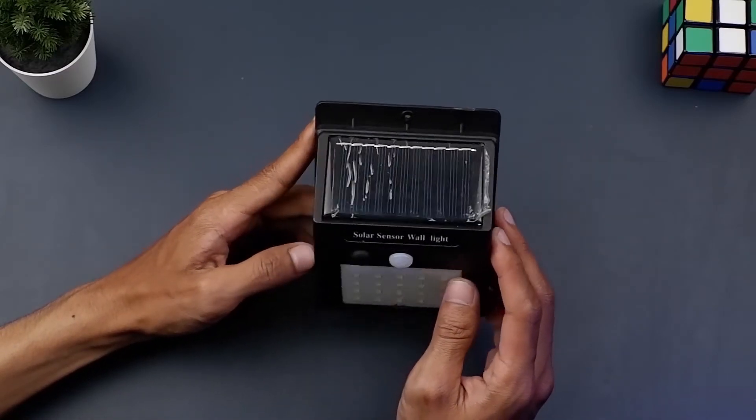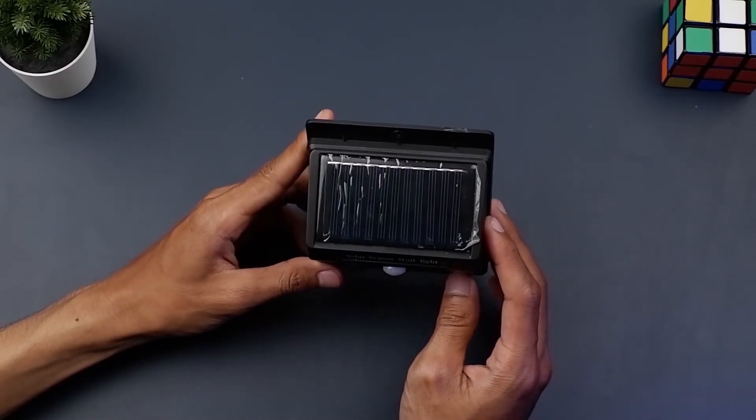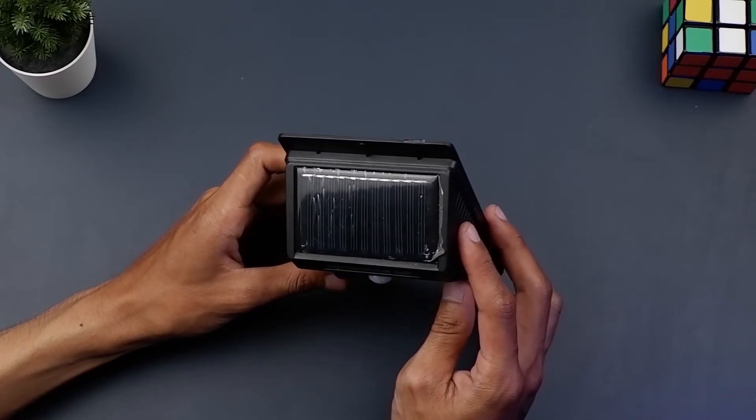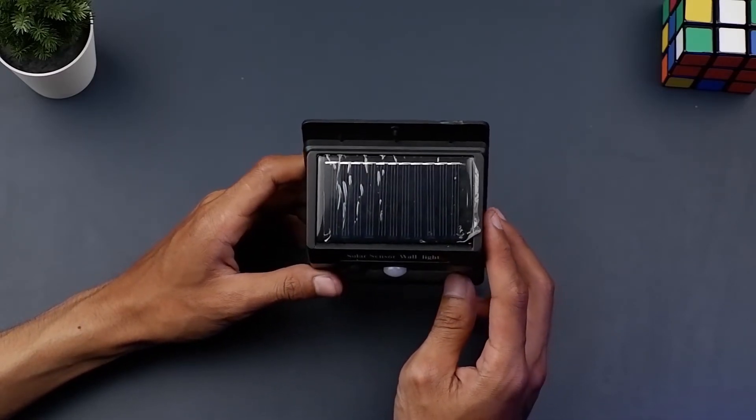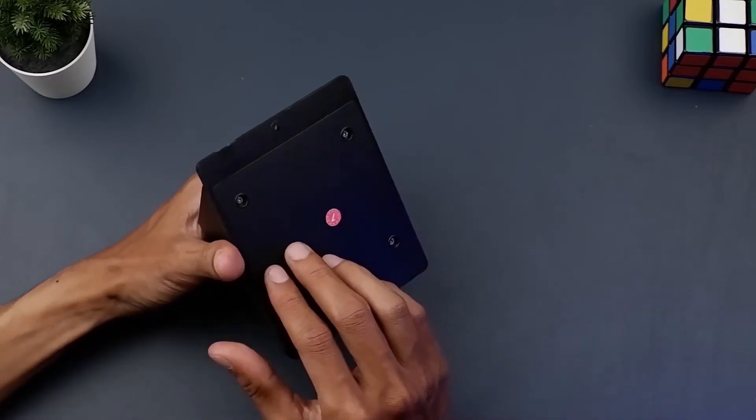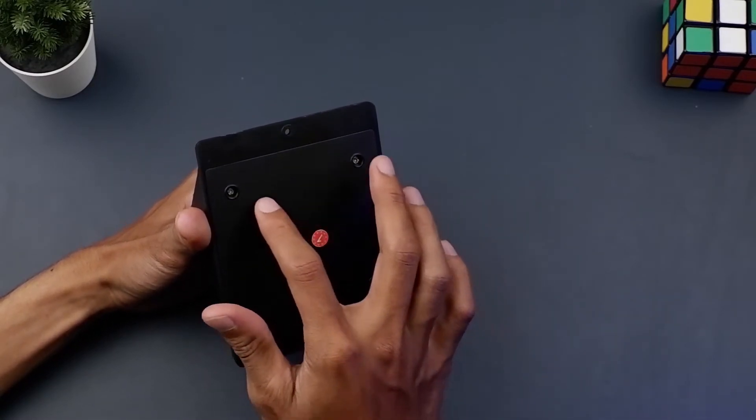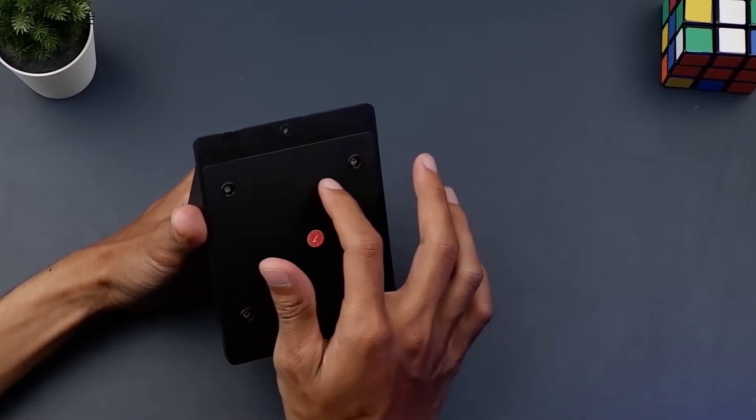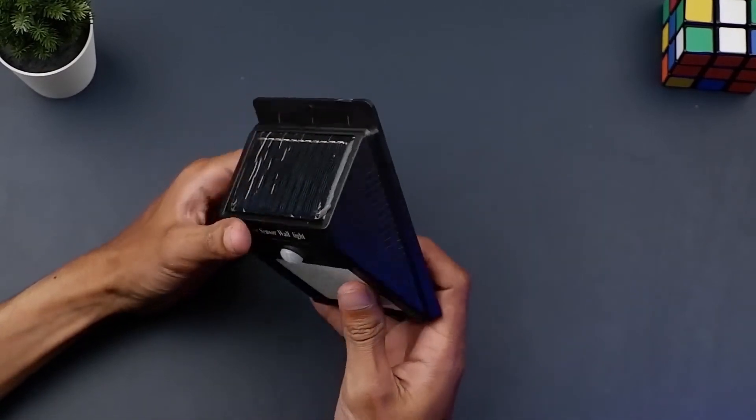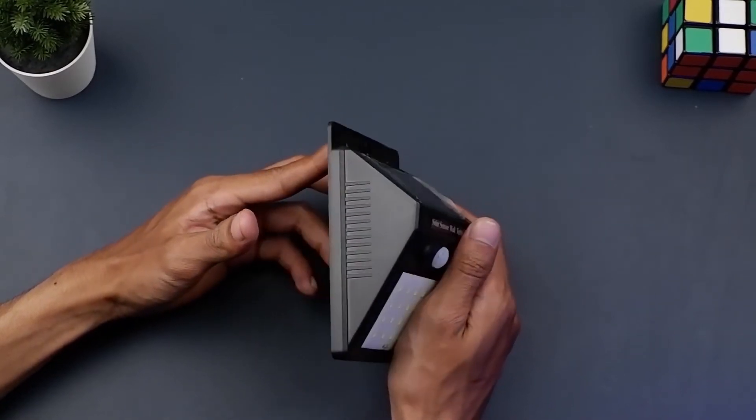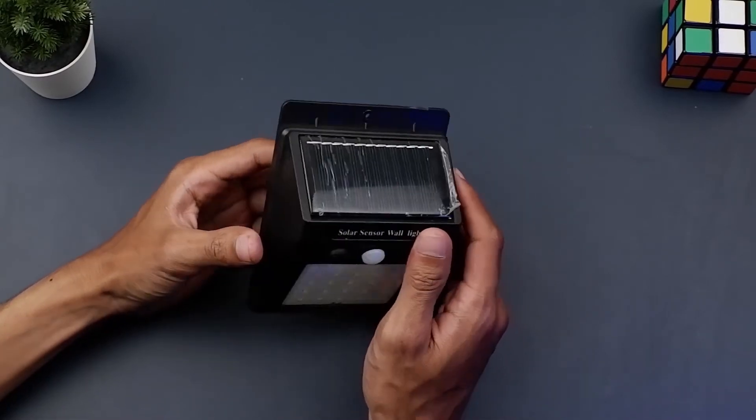Instalasinya cukup mudah tinggal paku ke dinding atau pasang skrup yang sudah disediakan. Jika dinding rumah tidak mau ada lubang kalian bisa pakai double tip ya di belakang sini. Kalian bisa pakai double tip lalu ditempelkan di dindingnya. Jadi gak usah bobok-bobok lagi dindingnya. Sayang-sayang.